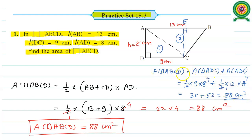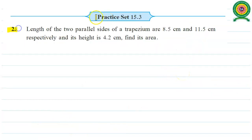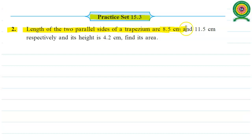So this is the other way to find the area of given quadrilateral ABCD. Now look at the second question from Practice Set 15.3. Here we have given the decimal values of the lengths of parallel sides and the height of the trapezium. The lengths of two parallel sides of a trapezium are 8.5 cm and 11.5 cm respectively, and its height is 4.2 cm. Find its area.